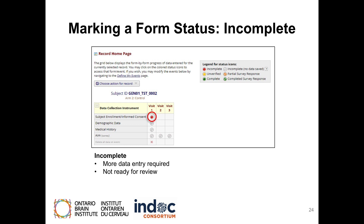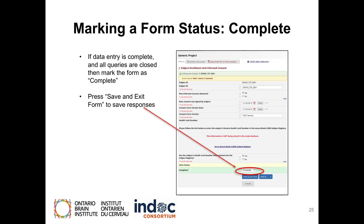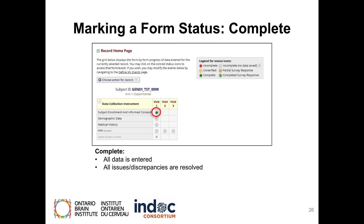A red bubble indicates the form has more data entry required and is not yet ready for review. To mark a form as complete, all fields must be filled out and data entry is completed. Select Complete from the drop-down menu and press Save and Exit Form to save responses and mark the form as completed. On the visit schedule grid, you will see a green bubble to indicate that the form is complete, meaning all data has been entered and all issues or discrepancies are resolved.